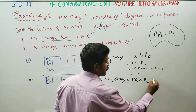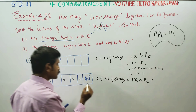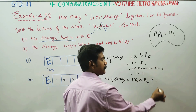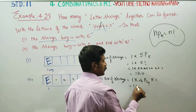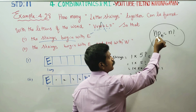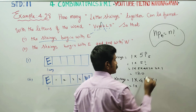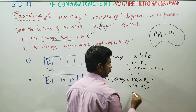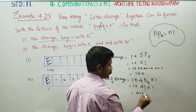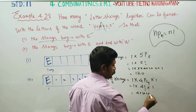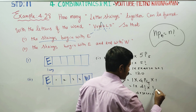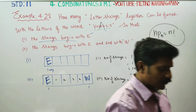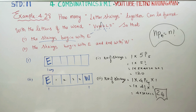The remaining four positions can be filled in 4P4 ways, which equals 4 factorial = 4 × 3 × 2 × 1 = 24. So 24 strings can be formed.